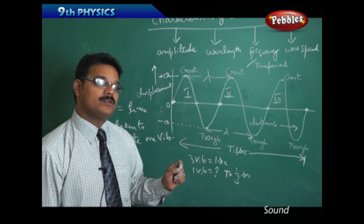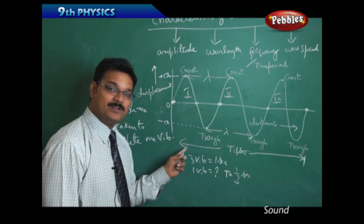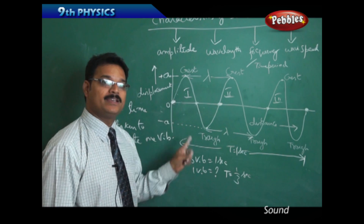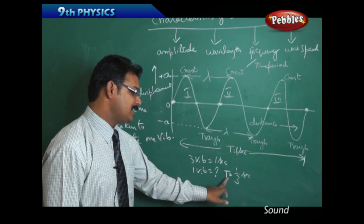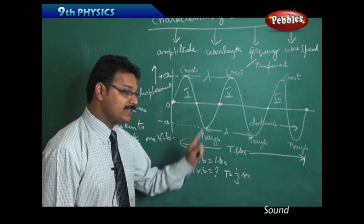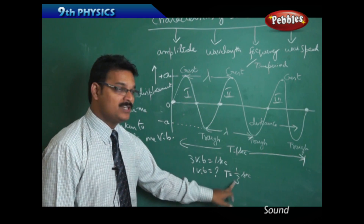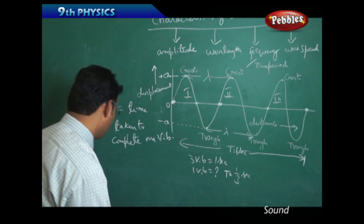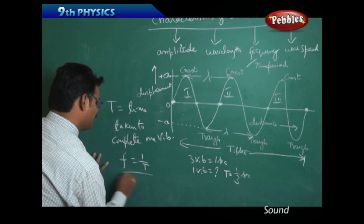Observe: previously the frequency was three Hertz, and now the time period T = 1/3 second. Notice that F = 3 and T = 1/3, so instead of 1/3 I can write 1/F. Therefore F = 1/T.